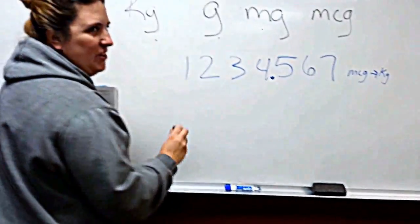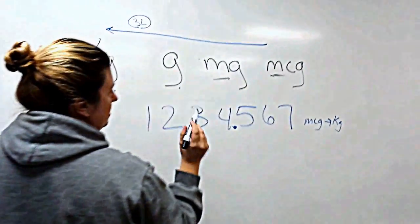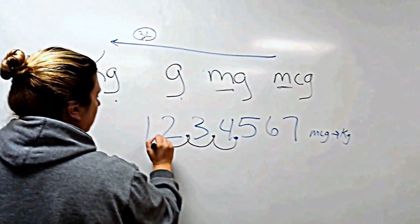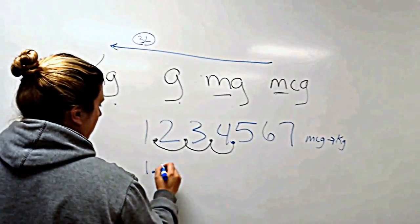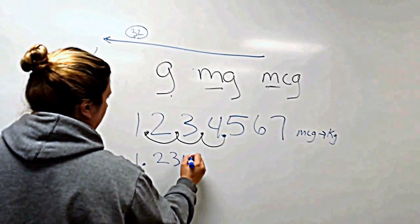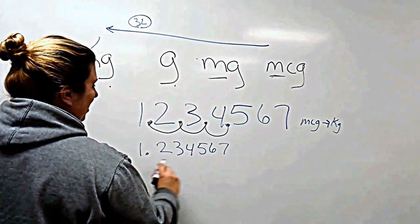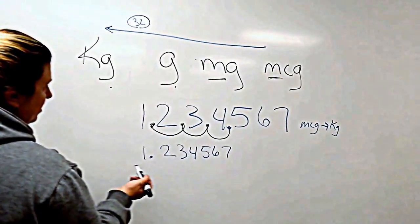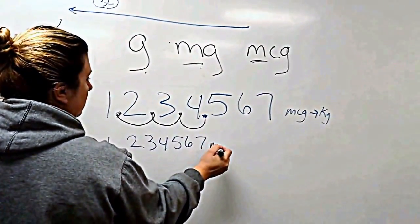So the first conversion would be from micrograms to milligrams. So you'd go one, two, three. Okay. So your new number is one, point, two, three, four, five, six, seven. You would never have all those numbers. You'd probably drop it off right here, but this is just for the sake of conversions. The first conversion is to micrograms.